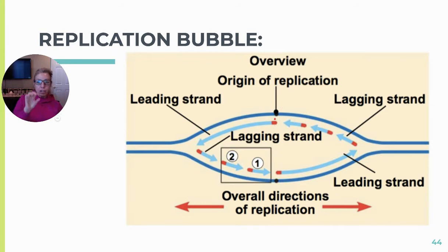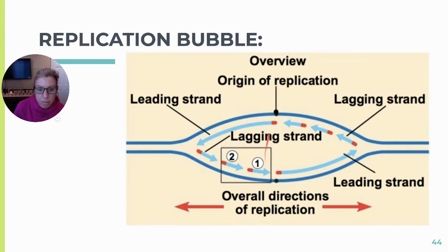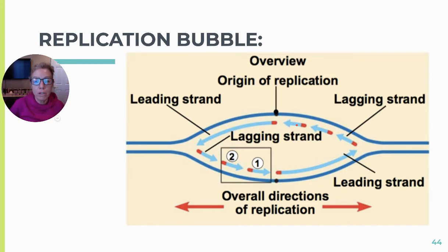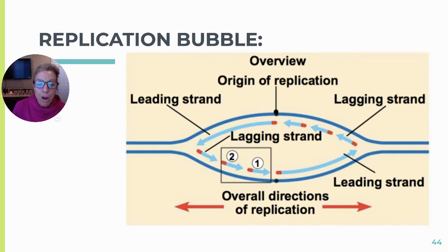At the origin of replication — a specific site where replication begins — assume one side is the 3' end and across the street is 5'. Wherever there is a 3' end, that is the leading strand and DNA polymerase takes off quickly. The lagging strand has to jump back repeatedly. Now I'll introduce another enzyme: RNA primase. RNA primase lays down a short RNA primer to give DNA polymerase something to work off of to get started.